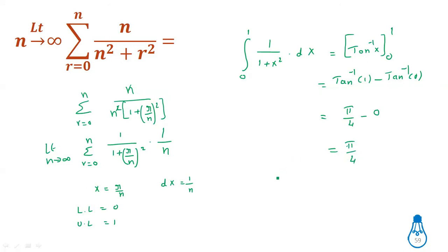So for the previous problems: we take n common or n² common as needed, then substitute x = r/n and dx = 1/n. The limits are derived directly — lower limit is 0 and upper limit is 1. The standard formula gives tan inverse of x, and substitution gives the final answer.